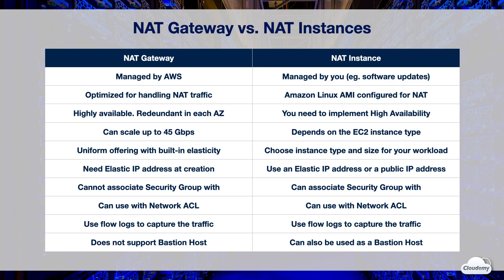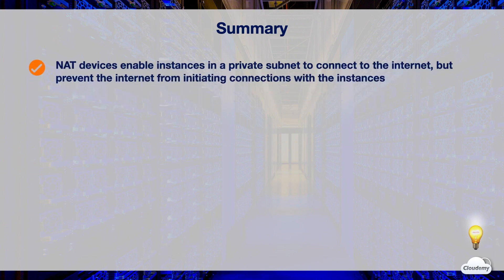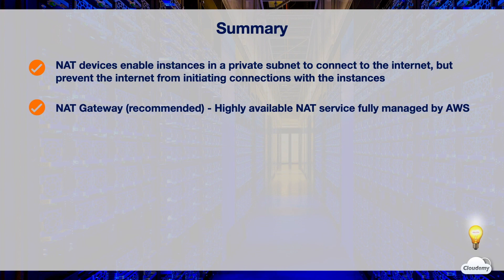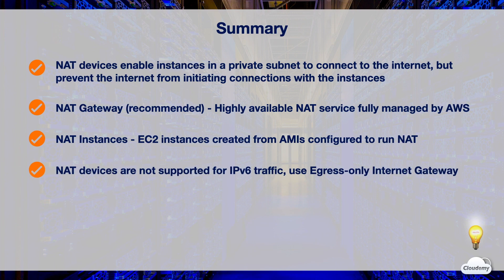AWS recommends NAT gateways, as they provide better availability and bandwidth over NAT instances. NAT devices enable instances in a private subnet to connect to the internet, but prevent the internet from initiating connections with the instances. AWS offers two types of NAT devices: NAT gateway or NAT instances. NAT gateway is a highly available NAT service fully managed by AWS — you don't need to perform any maintenance. NAT instances are special EC2 instances created from Amazon Linux AMIs configured to run as a NAT server, and you need to perform maintenance such as installing software updates or operating system patches. Both NAT gateway and NAT instances are not supported for IPv6 traffic — use an egress-only internet gateway for IPv6.